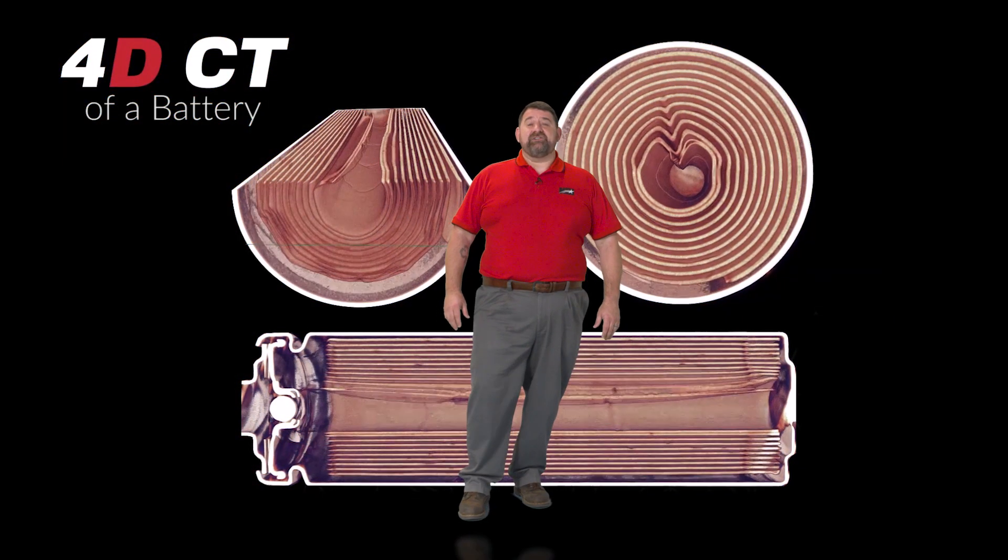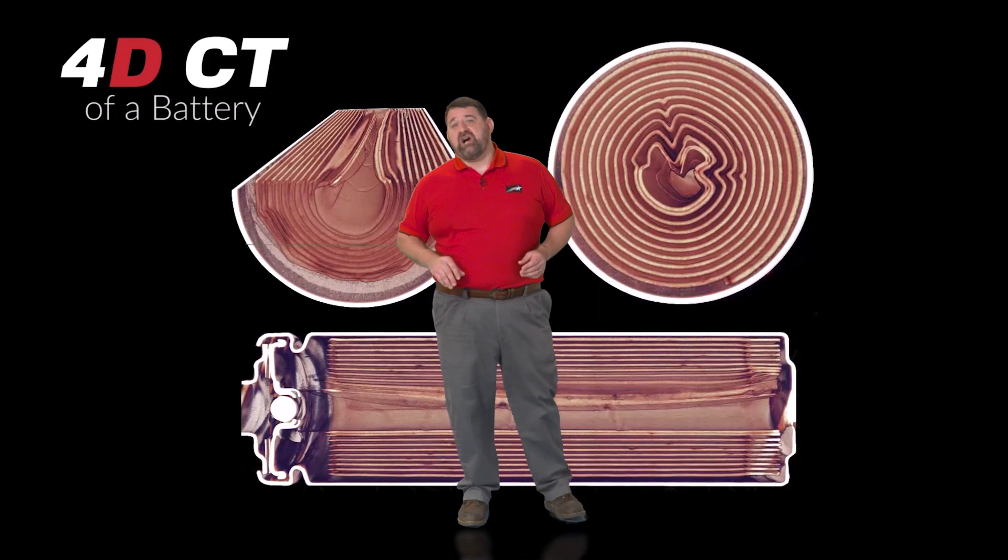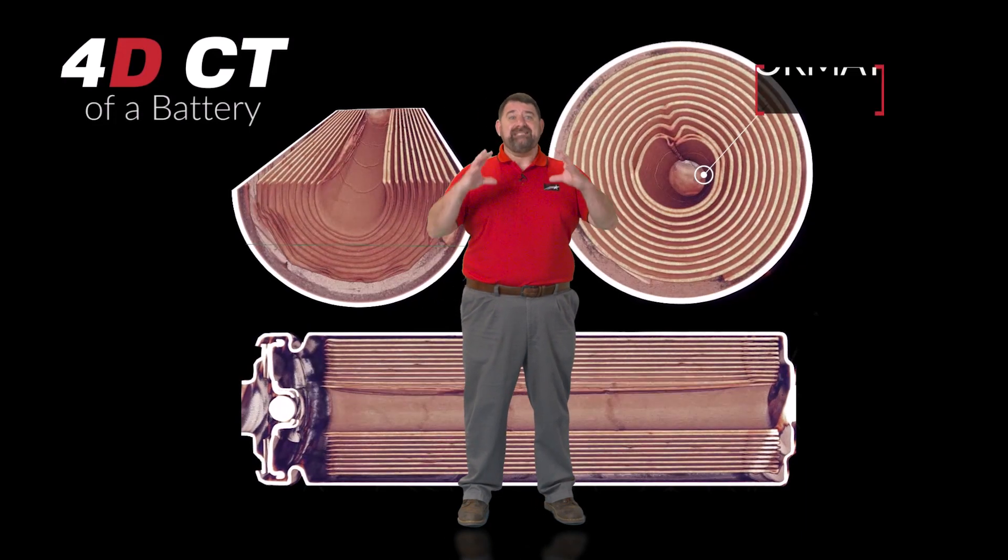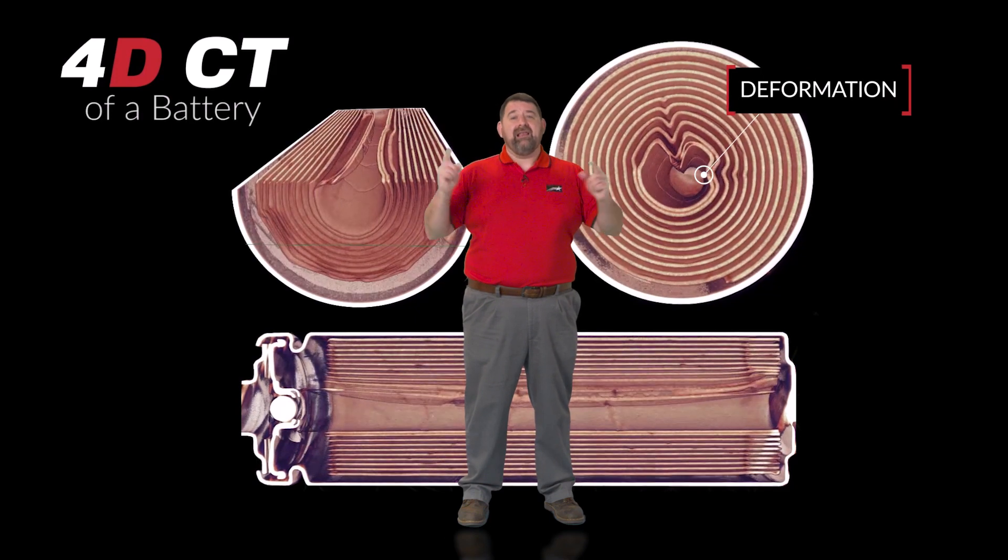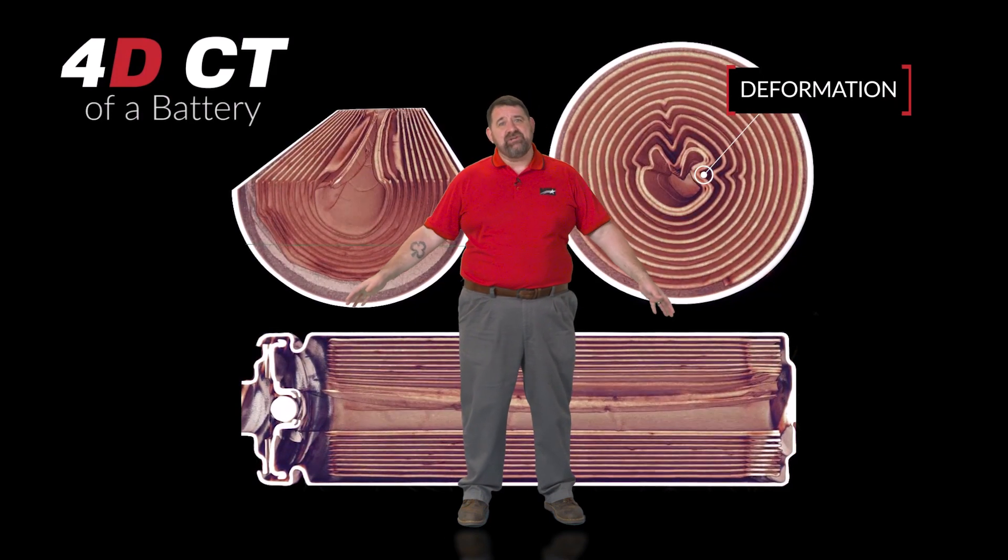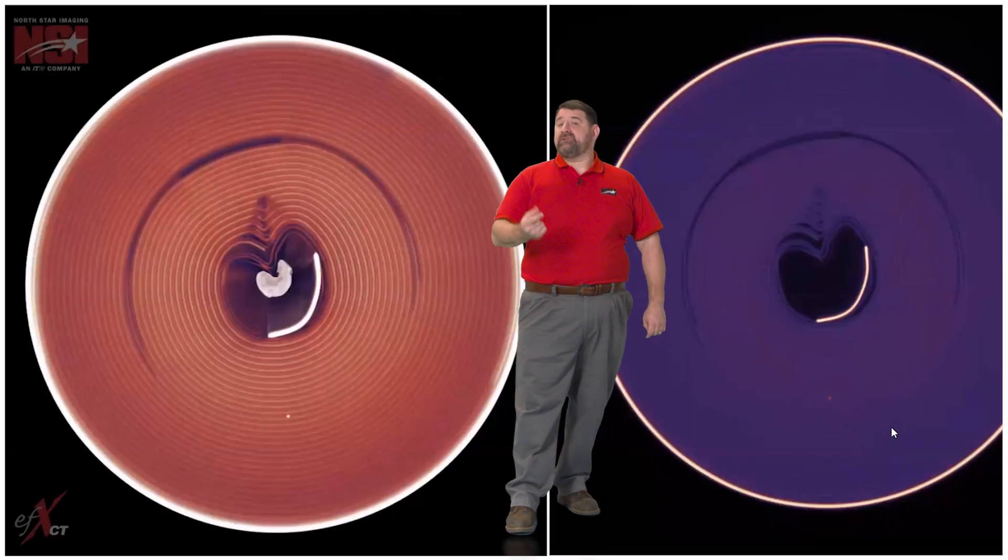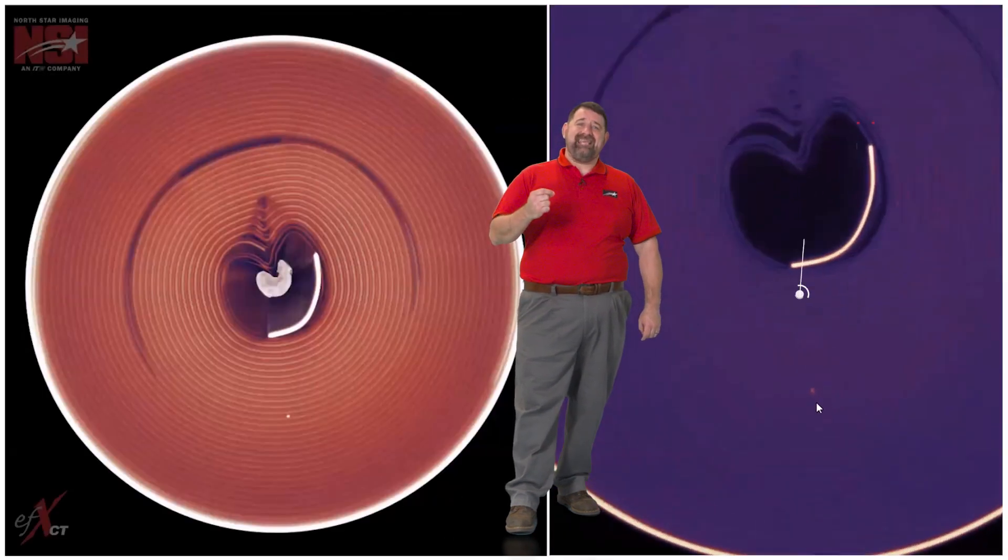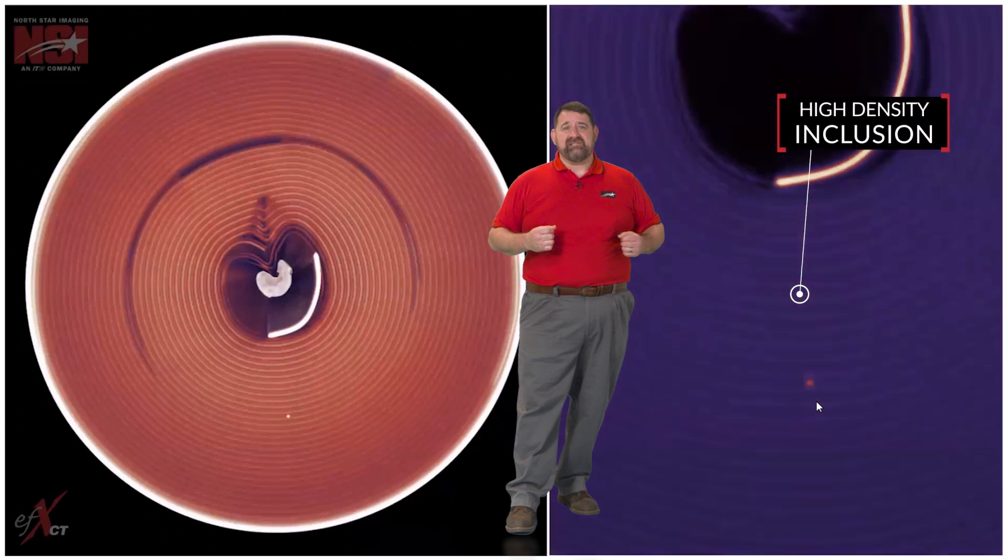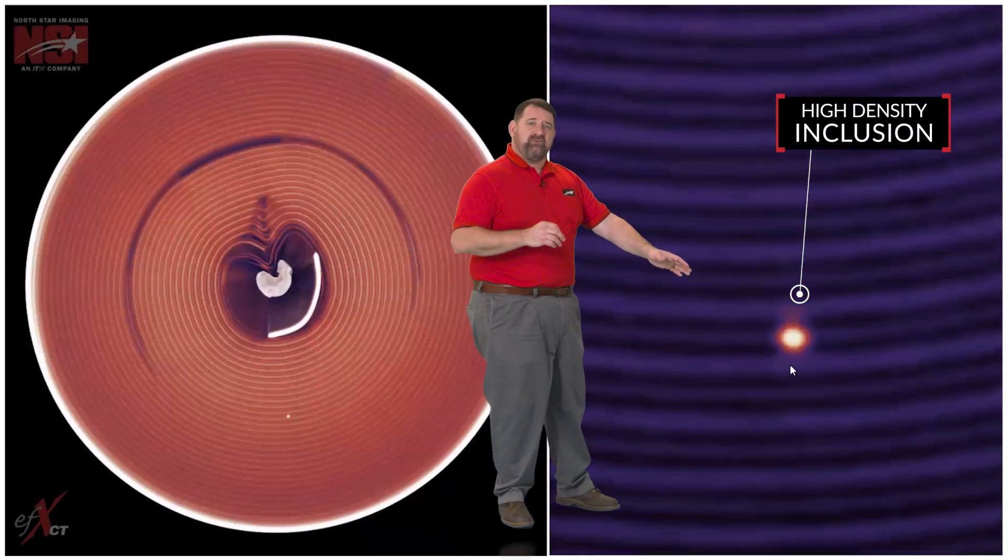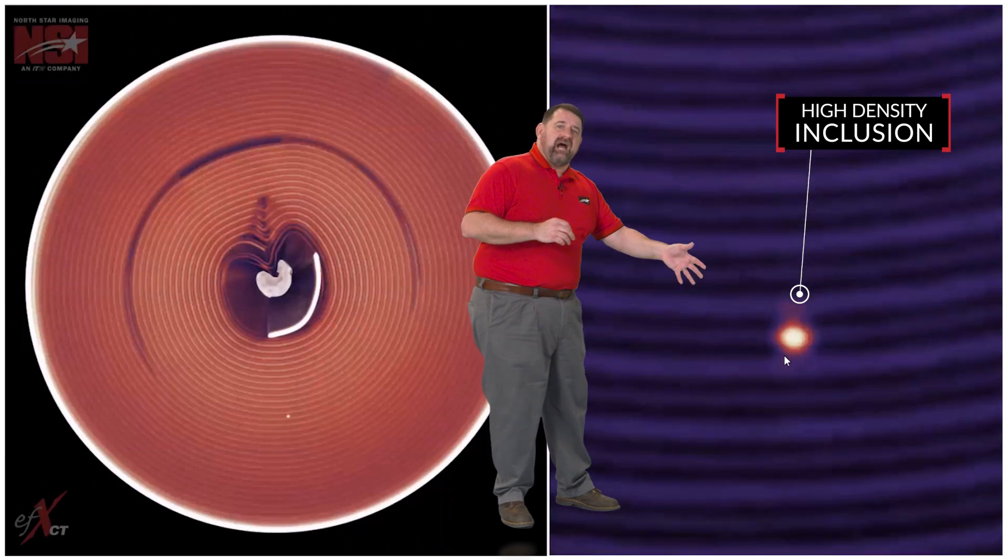As batteries are checked and tested through hundreds of charge and discharge cycles, CT imaging is used to check for deformations in the jelly roll, like this dynamic image captured using NSI's 4D technology. CT also has the ability not just to see high density inclusions like this, but also where it falls inside the jelly roll and how many layers are bridged.